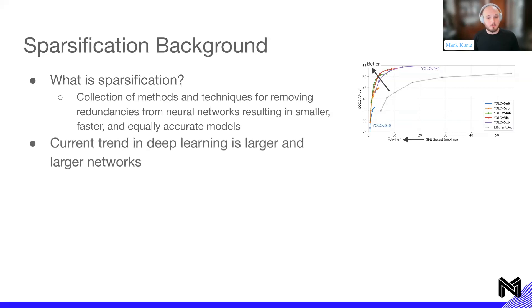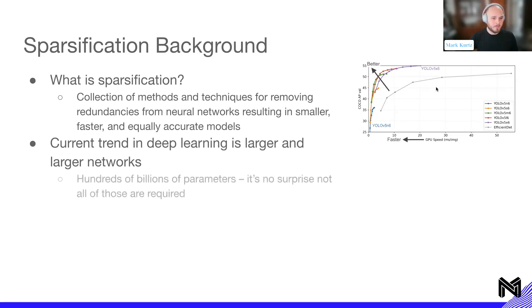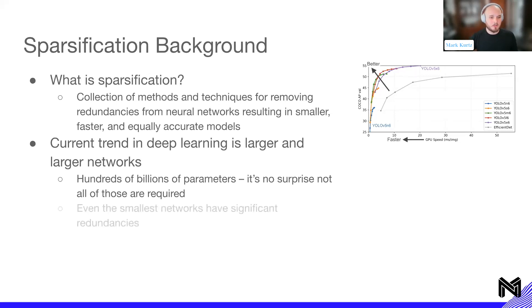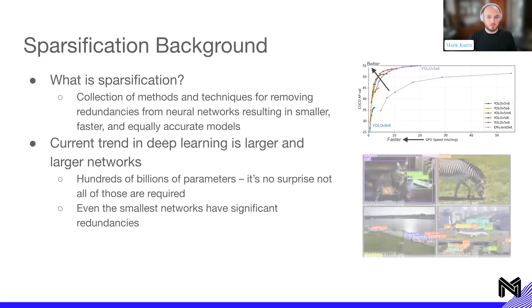Looking at current trends in deep learning, it's larger and larger networks — we can see this with even the YOLO v5 and YOLO v5 P6 models. As we want to scale in accuracy, we scale up model size. Especially with large language models, we have hundreds of billions of parameters, and it's no surprise that not all of those are actually required. What may be surprising is that even the smallest networks have significant redundancies that we can get rid of and leverage for compute.